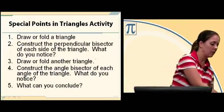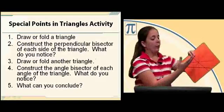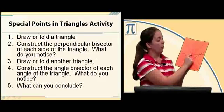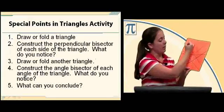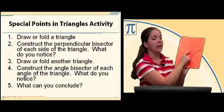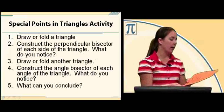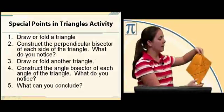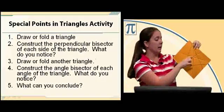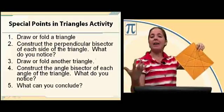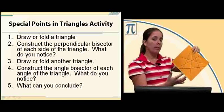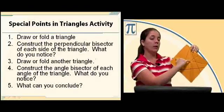Now all three of those perpendicular bisectors of those sides are going to intersect at a point of concurrency, or a single point. Here I've drawn in my perpendicular bisectors in red so you can see they have a point of concurrency. This point of concurrency happens to be on the outside of my triangle, though that doesn't always happen. On my next triangle, I've folded the three perpendicular bisectors and the point of concurrency is on the inside. So the point may be on the outside or inside, but no matter what kind of triangle you have, if you construct the three perpendicular bisectors, they will all intersect in one point.